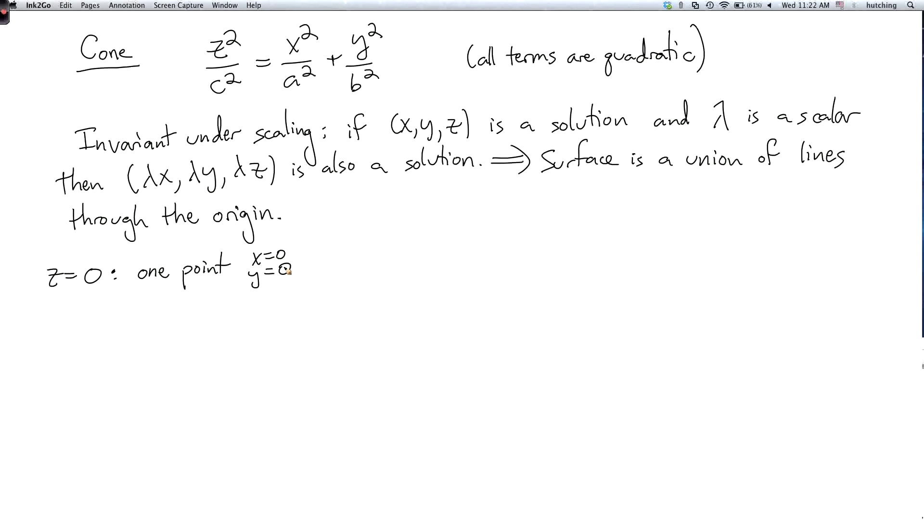If we set y equals zero we get the equation z squared over c squared equals x squared over a squared.